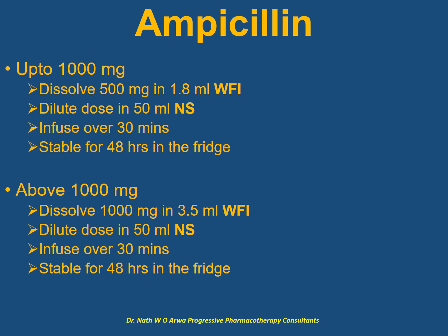For ampicillin IV, for doses up to 1 gram, dissolve every 500 mg vial in 1.8 ml of water for injection prior to dilution in 50 ml of normal saline. The IV solution should be infused over 30 minutes, and stability is 48 hours in the fridge. For doses above 1 gram, dissolve every 1 gram vial in 3.5 ml of water for injection, dilute in 50 ml of normal saline, and infuse over 30 minutes. Stability remains the same.